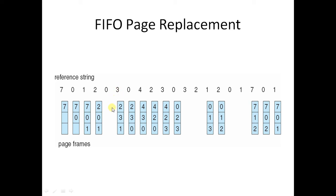Now we encounter 3. As you can see, 3 is not present, so we use the FIFO algorithm — 3 will come into the next FIFO position. Now we move to 0; 0 is not present here, so according to FIFO, 1 will be removed out and 0 will be entered in its position. Now 4 comes and will be placed in the first FIFO position. Then 2 is not present, so 2 moves to the second position. We move to 3; 3 is not present, so 3 moves to the third position and 0 is removed out.